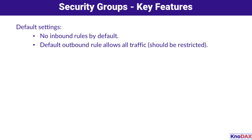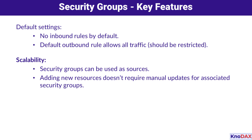Let's highlight some key features of security groups. When you first create a security group, there are no inbound rules, so nothing can connect until you specify it. However, by default, all outbound traffic is allowed. AWS recommends removing this default rule and specifying outbound rules for better control.